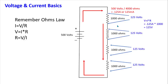We can also reverse-engineer this using another form of Ohm's Law: V = I × R. With a 1,000-ohm resistor and 0.125 amps flowing through it, we calculate a 125-volt drop across that resistor. All resistors here are the same value so results are the same, but a different-value resistor would give a different voltage drop.